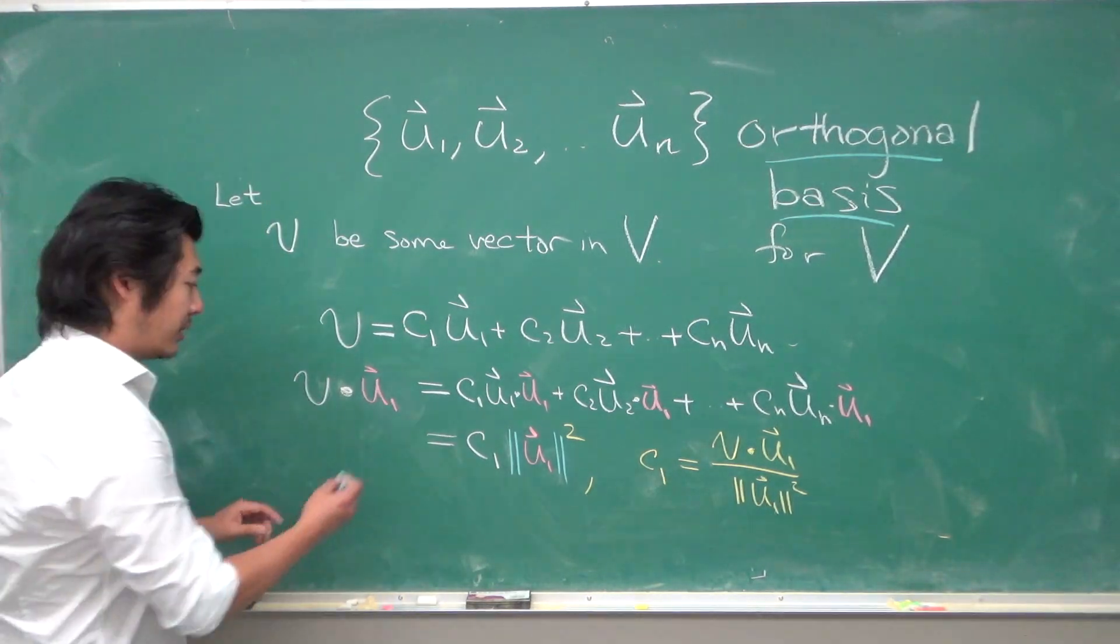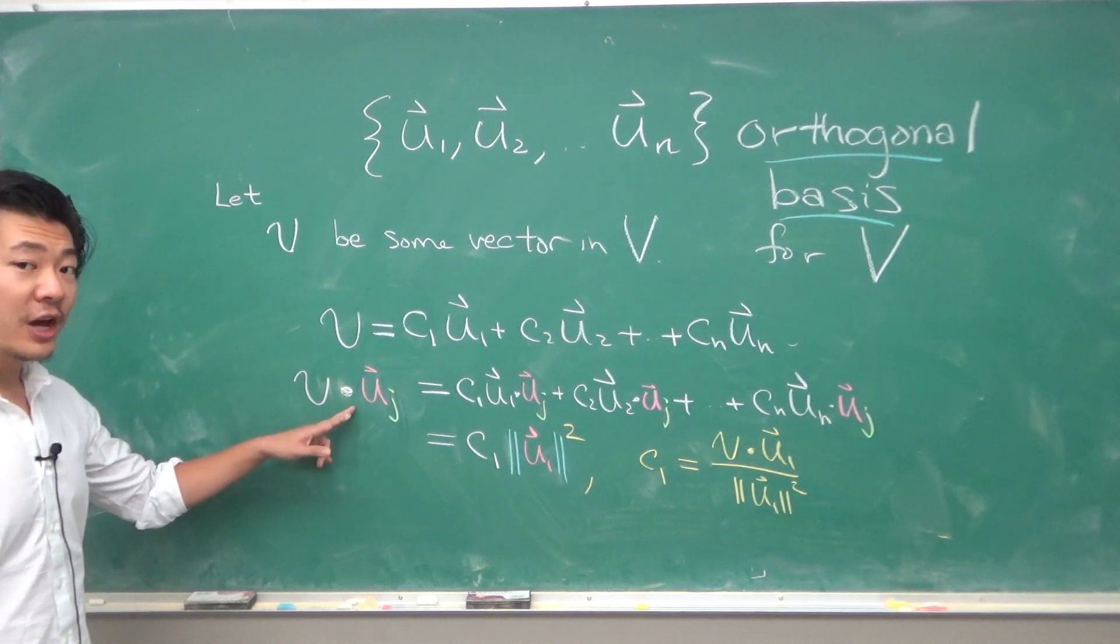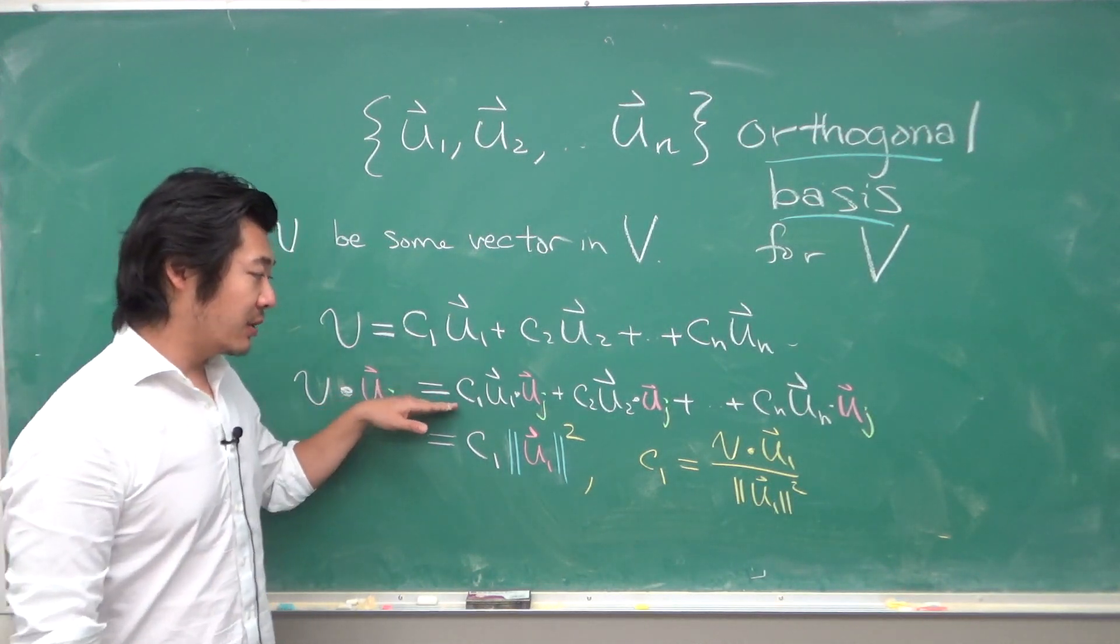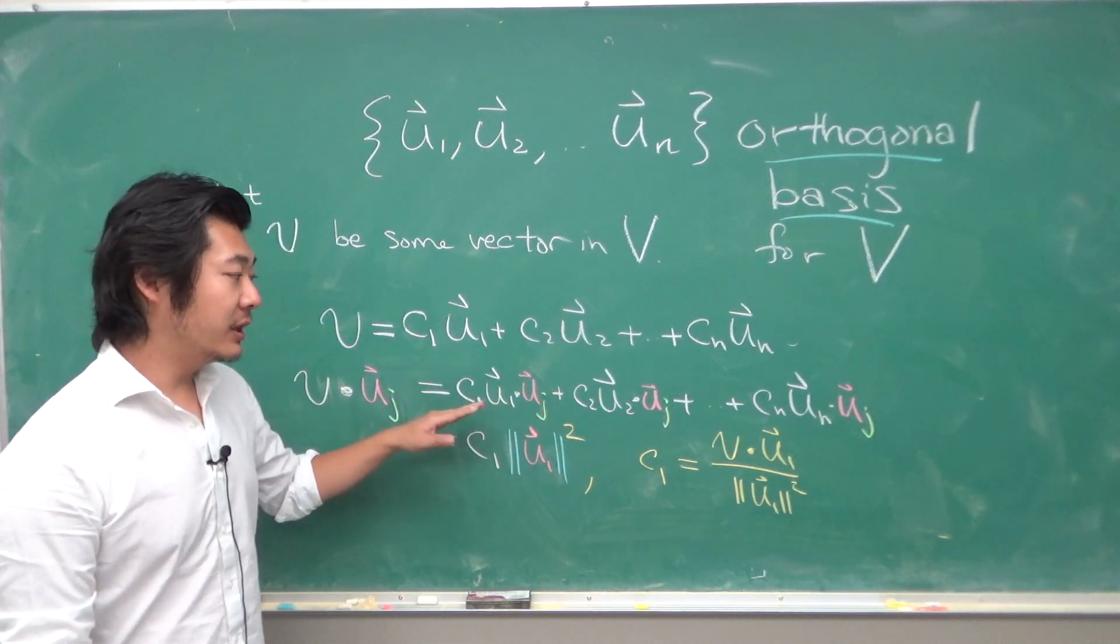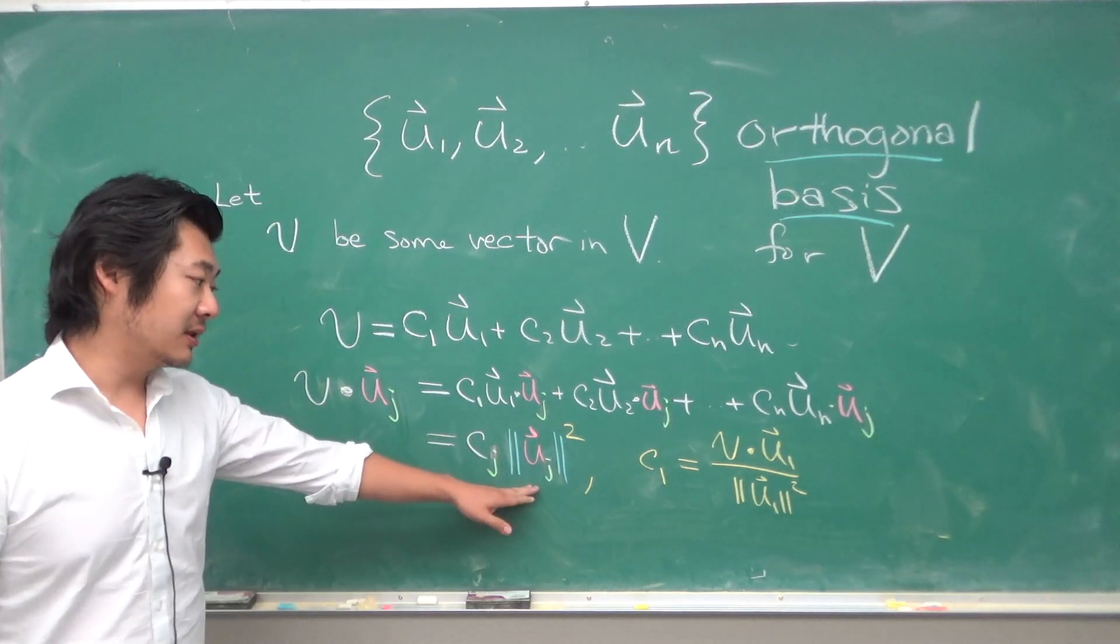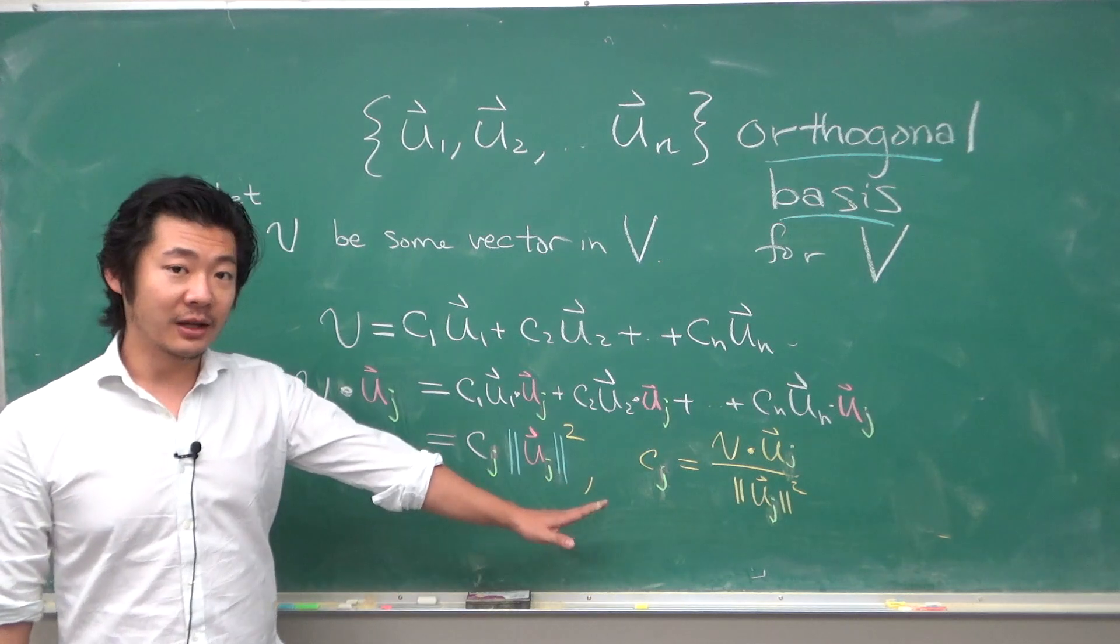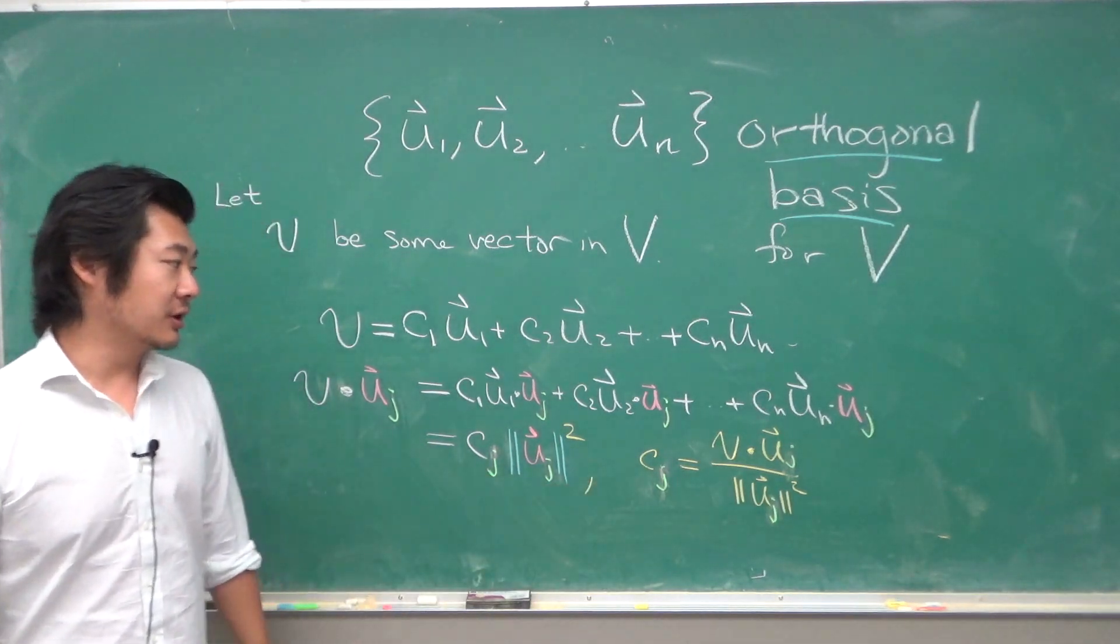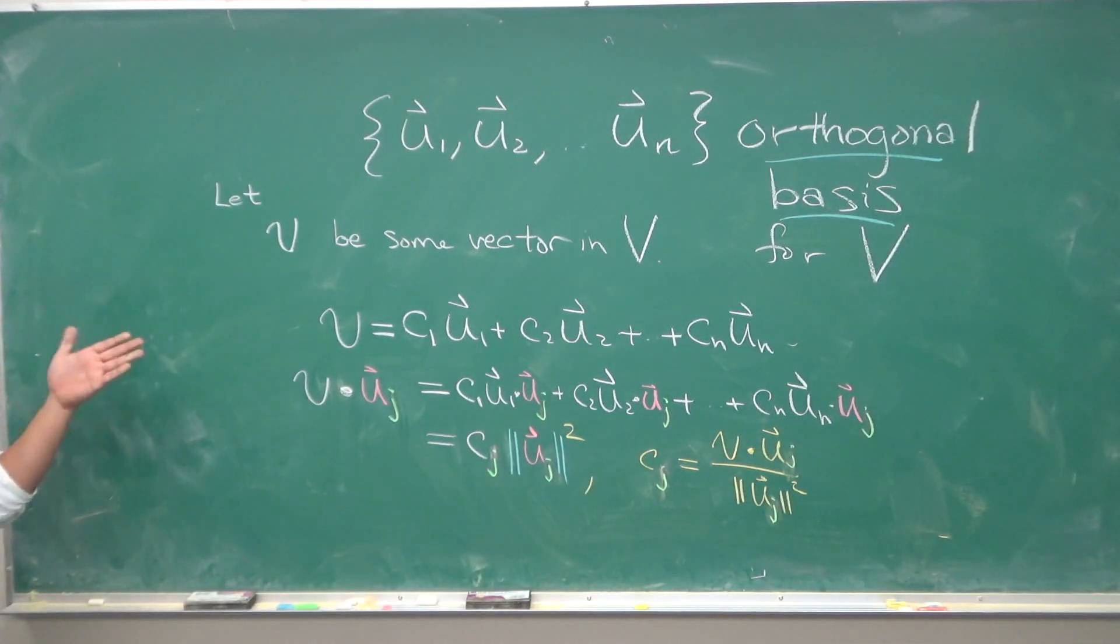You can do the same step but with the vector uj. Take the dot product of uj with everything, then the only one that will survive is the jth coefficient times the magnitude. We have a formula to get the cj coefficient: if we are given a vector and want to rewrite it under an orthogonal basis, we can figure out what the coefficients are using this formula.